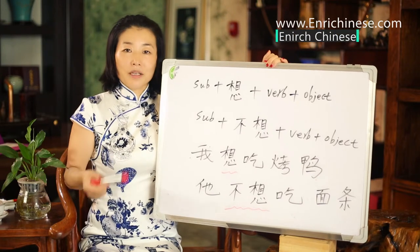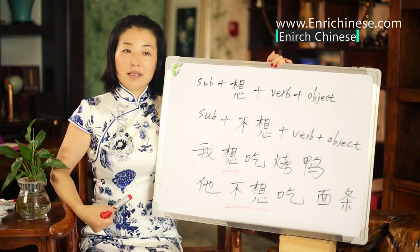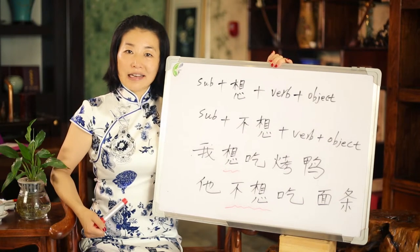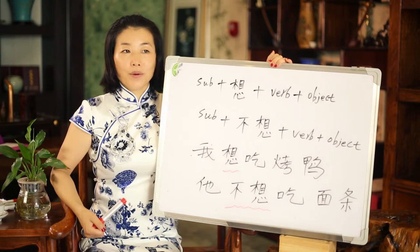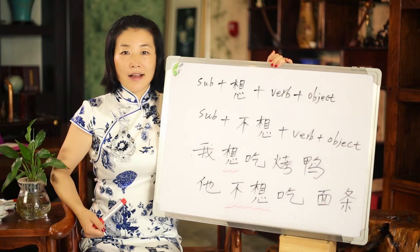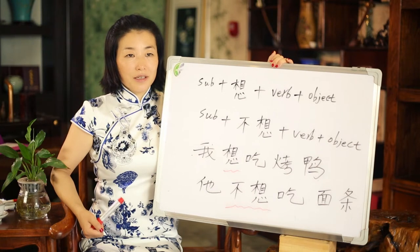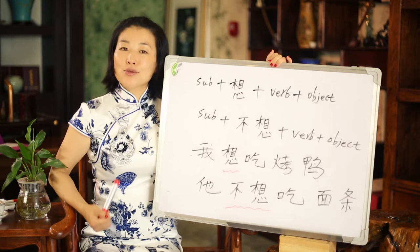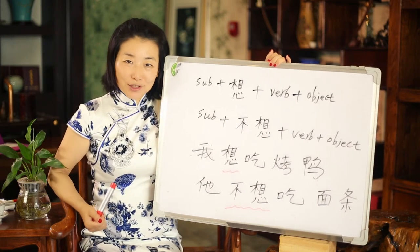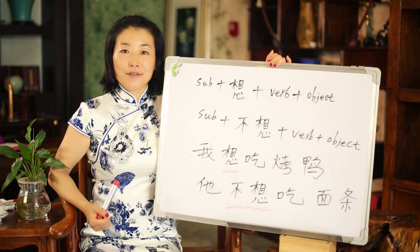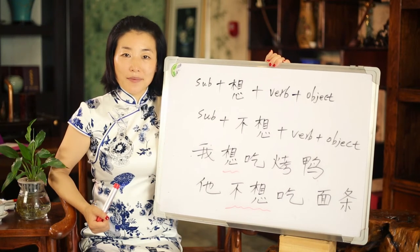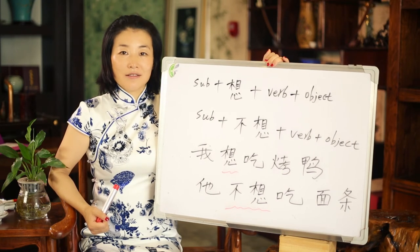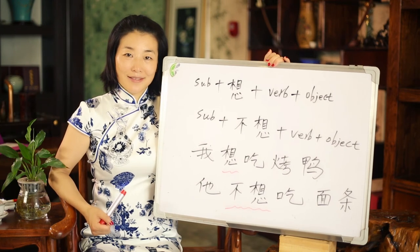Next lesson we'll learn another modal verb: 喜欢. Someone might say, hey, I learned 喜欢 before — 喜欢 means like. 我喜欢你, I like you. 我喜欢面条, I like noodles. 我喜欢吃面条 means I like eating noodles — it doesn't mean I would like to have some noodles right now. So the difference is: 喜欢 means I like doing something, while 想要 means I would like to have something. See you next lesson.